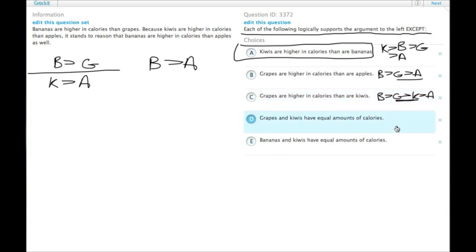D, grapes and kiwis have equal calories. So, we have B is greater than G, but that's equal to kiwis, which are in turn greater than A. So, this still gets us B greater than A.